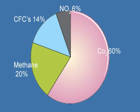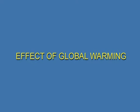In this diagram we see the factors responsible for the contribution of different greenhouse gases. The percentage contribution is: carbon dioxide 60%, methane 20%, chlorofluorocarbon 14%, and nitrogen peroxide 6%.